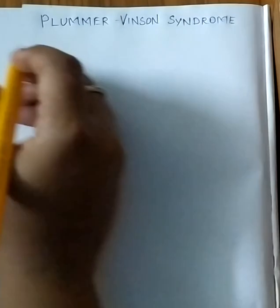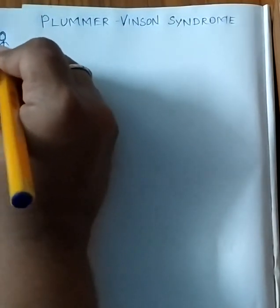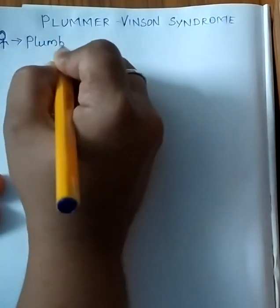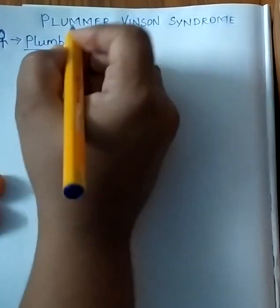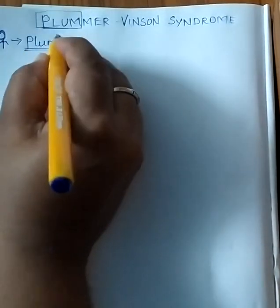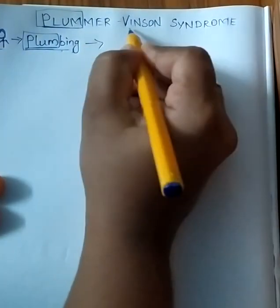Hello everyone, today is the first video and today I am going to teach you about Plummer-Vinson syndrome using an easy tactic to remember. So let's start — just imagine there was a man whose work was a plumber. Just take 'plum' from the question, so that man's work would be a plumber, and his name was Vincent.